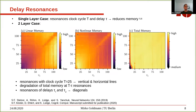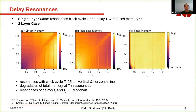Moving away from the feedback gains, we look at the delays of the system. For the single layer case, literature reports that resonances between clock cycle and delay tau appear and reduce memory. In the two-layer case, we scan tau_1 and tau_2, and again see resonances with the clock cycle of 25, appearing at 25, 50, 75, and 100. These resonances appear in both layers and in all types of memory: linear memory, nonlinear memory, and the total. We additionally see resonances between the delays themselves, visible as diagonals.